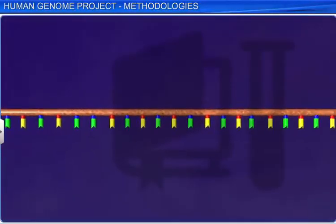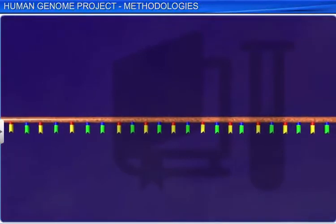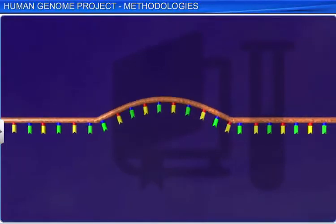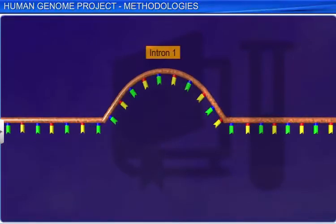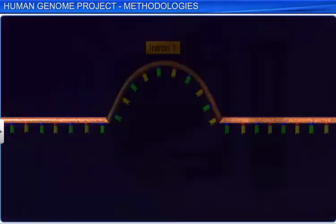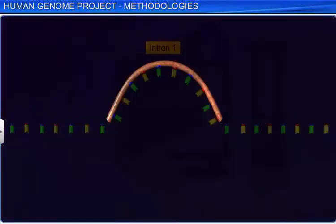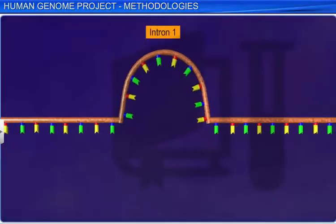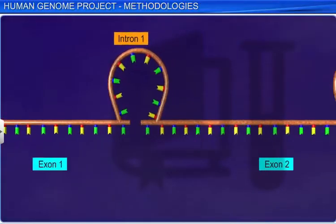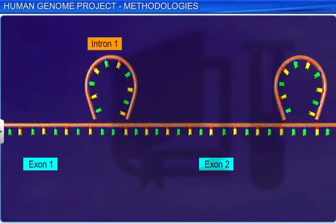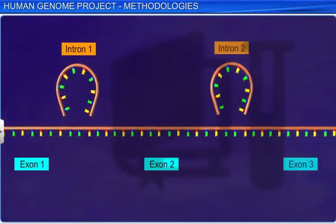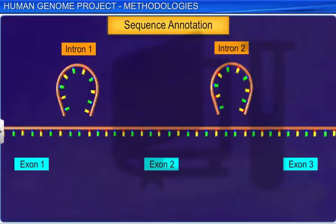In the second methodology, the entire set of genome — comprising all coding and non-coding sequences — was indiscriminately sequenced, and later different regions of the sequence were assigned a function. The assigning of functions to sequences is called sequence annotation.